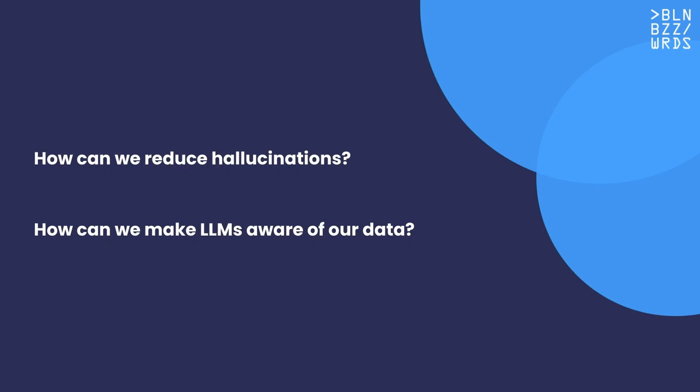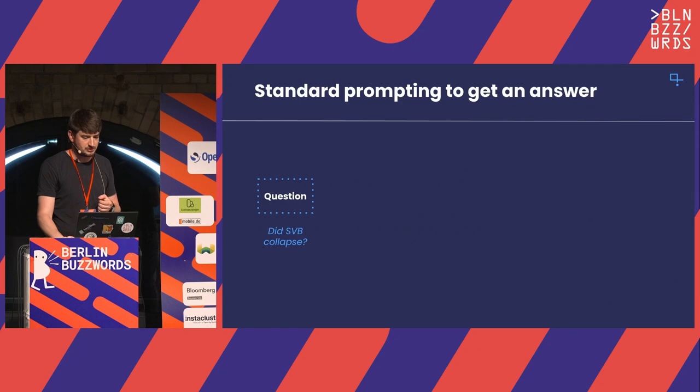Now that we know what hallucinations are, how can we reduce them? How can we also make the models aware about updated and recent information, or our own data? It turns out there's one key method that really helps, and it's called retrieval augmentation. I'll explain the key idea of this method.